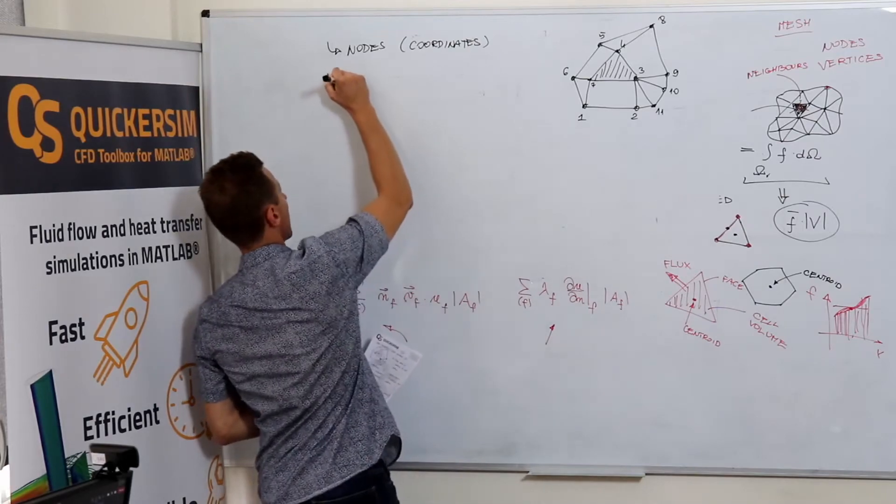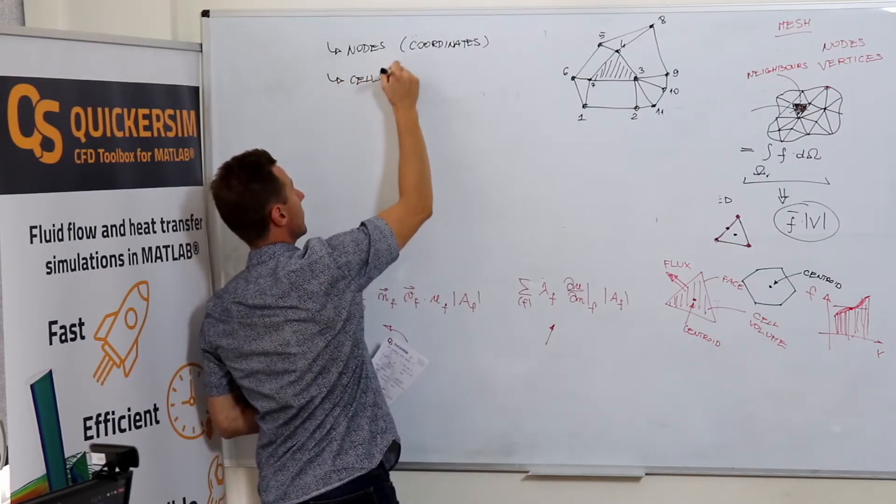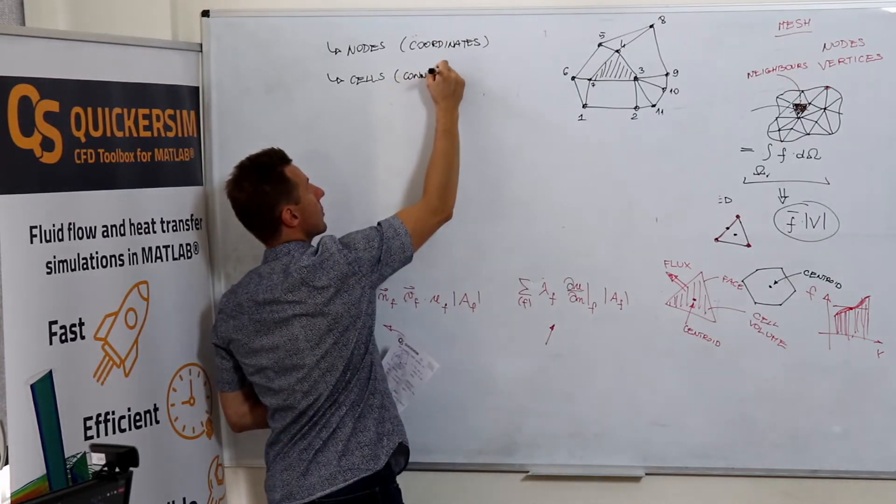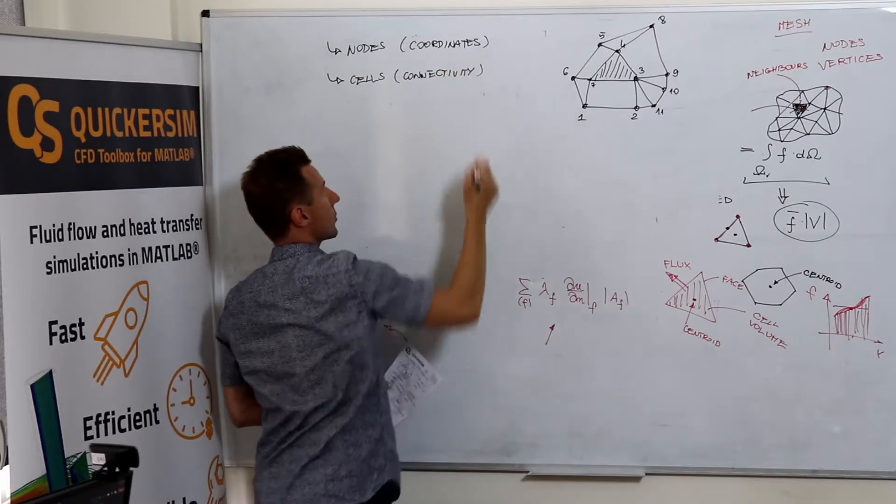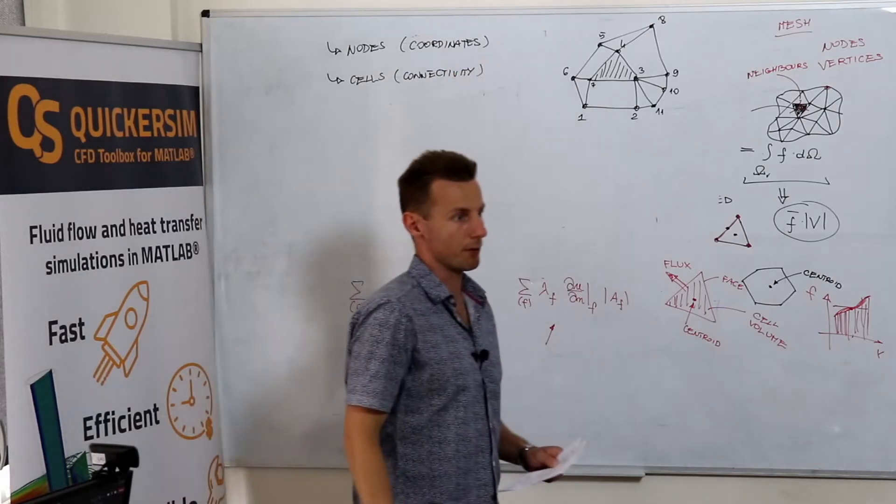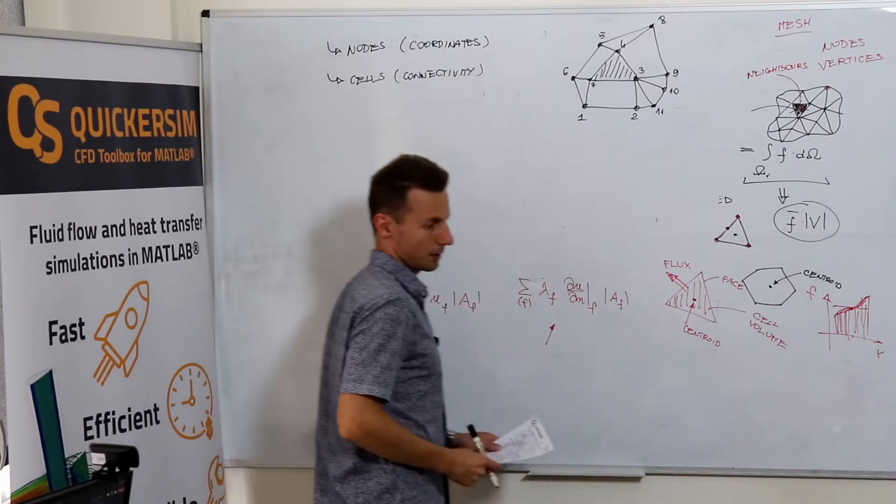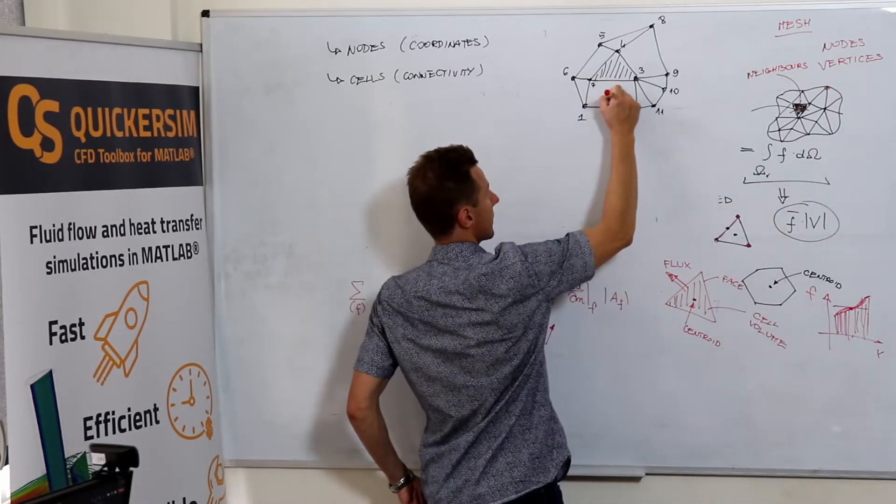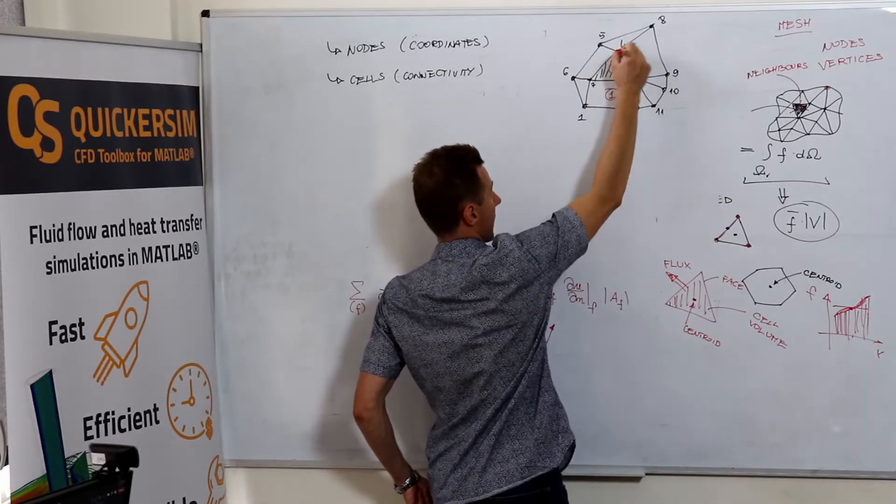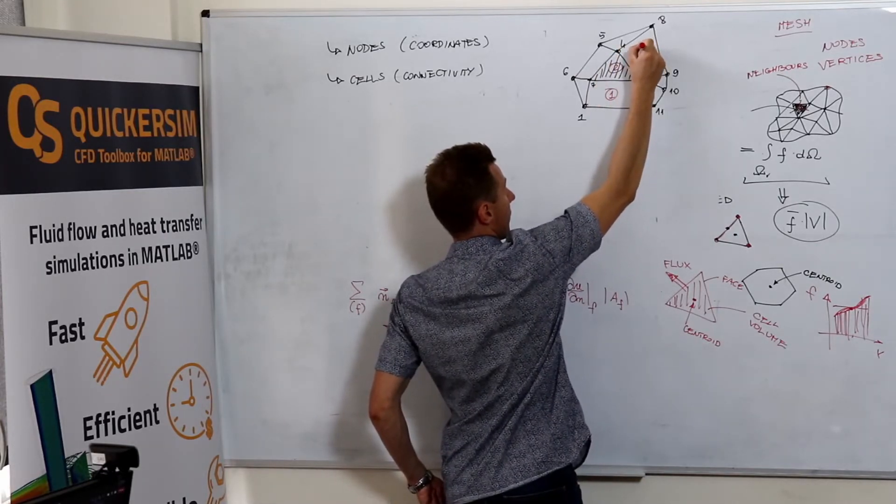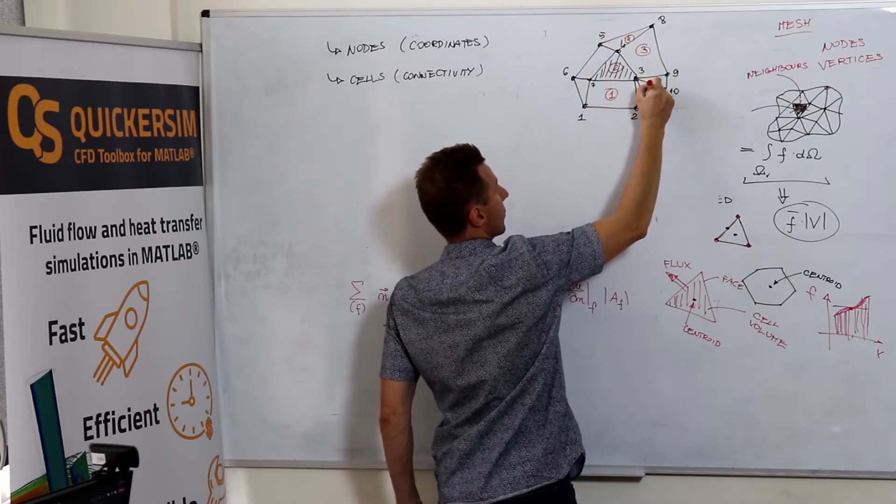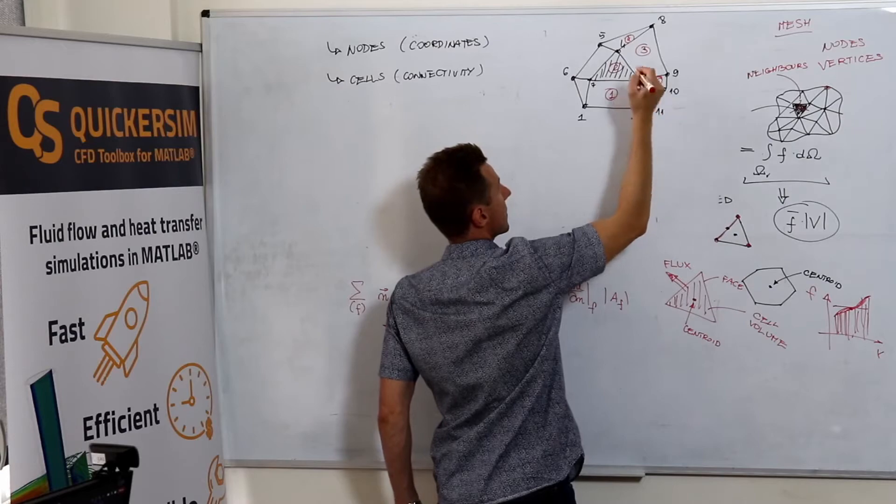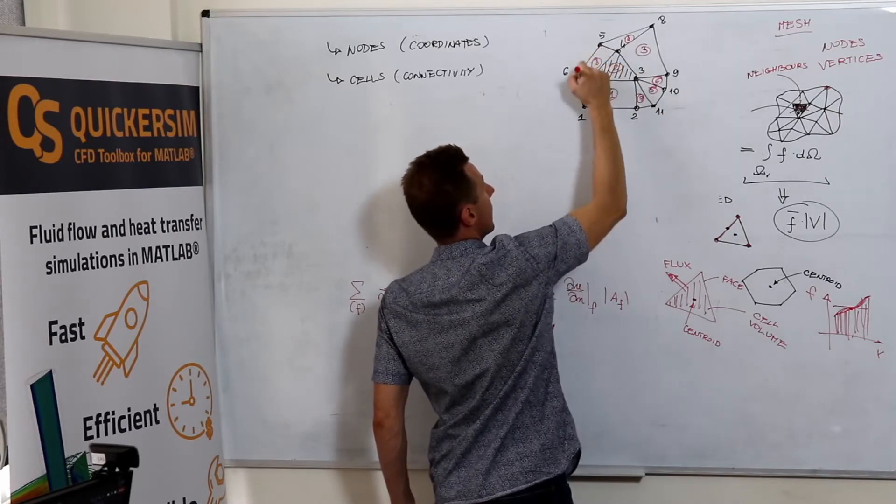So the second one are cells. And this one, as you said, should give you information about connectivity of the cells. So basically what we expect, let's say, is the first, second, third, fourth, fifth volume, sixth, seventh, eighth, ninth.